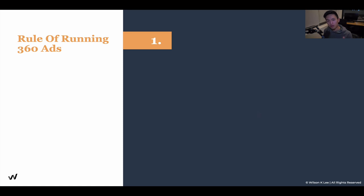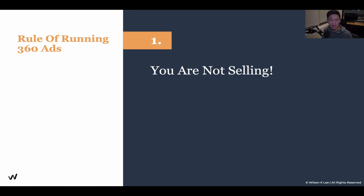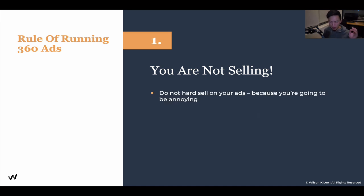There are two rules of thumb when running 360 ads. If you don't know how to run them, it's completely okay - this is an advanced strategy. Your whole point is to understand the concept and principle; you can find tech people to help you execute. The first rule is that you are not selling. Make sure when you're running your advertisement, you're not selling. Because when it comes to food and selling stuff online, it's not about hard pushing something down someone's throat - people will just reject that. When people sense that you're selling something, they automatically put up a guard.